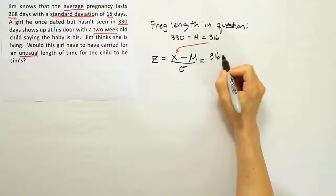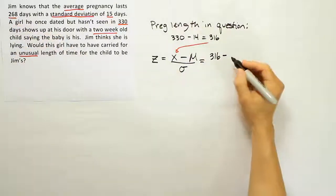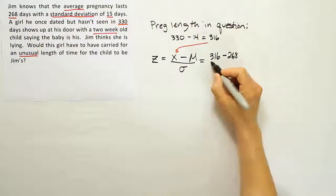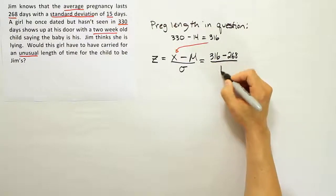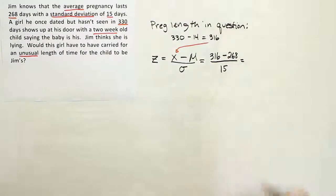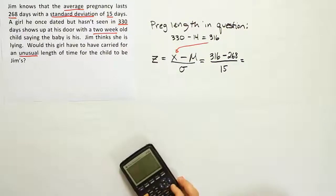So 316 minus 268, which is the average length of pregnancies, divided by the standard deviation of 15 days. And from here we'll see just how far from the mean that number is.